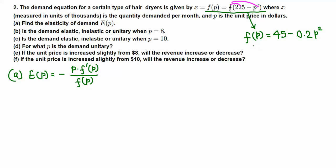Now let's take the derivative since we need it to find the elasticity of demand. The derivative of the constant 45 is 0, minus 0.2 times the derivative of p squared, which is 2p. So 0.2 times 2p gives f'(p) = negative 0.4p.